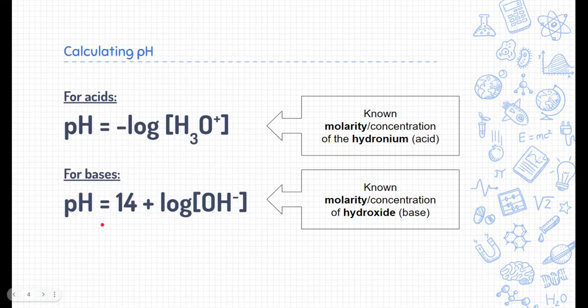Now, bases, we can calculate the pH of bases as well, even though pH stands for the power of hydrogen. Because the pH is in a scale and the acids and bases really relate to one another, what we do is a little bit differently. First, we start off with the number 14. And then this time, instead of using the negative log, we're going to add the log of the concentration of hydroxide.